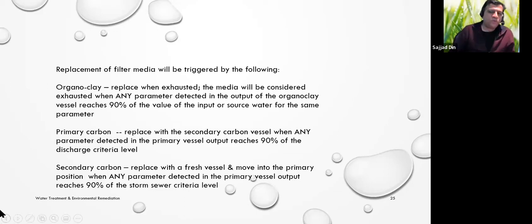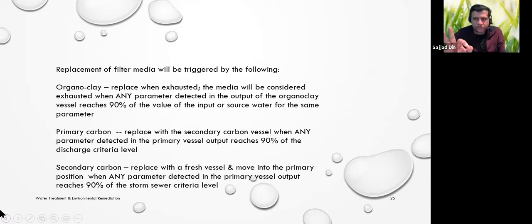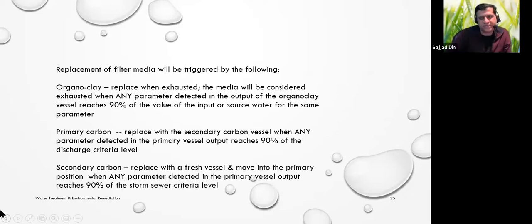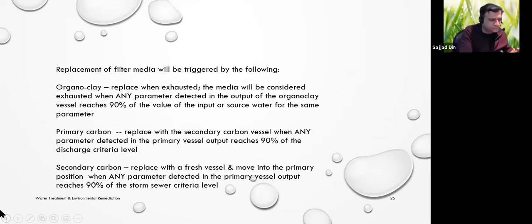When monitoring, we check whether the carbon needs to be replaced — after it removes enough contamination, it needs replacing. We have carbon vessels in series because we don't want even the slightest chance of contamination reaching storm or sanitary sewers. The difference between them is that sanitary sewers go to a wastewater treatment plant, whereas storm sewers go straight to a natural surface water body.